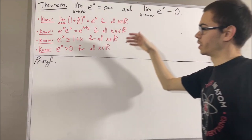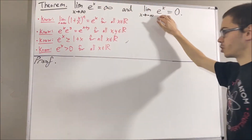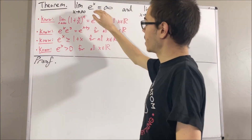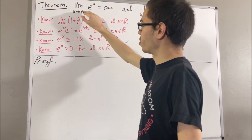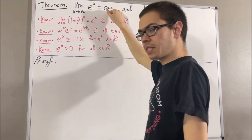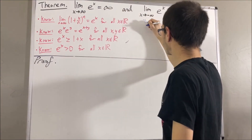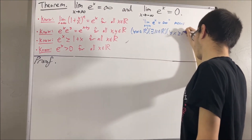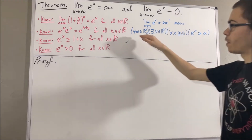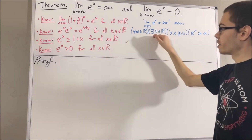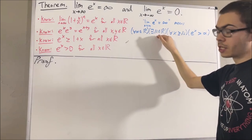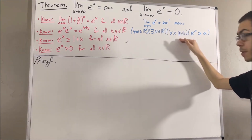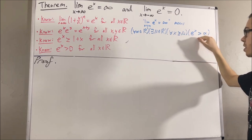Most importantly, what do these two things mean? To say the limit as x approaches infinity of e to the x equals infinity means the following: for every real number alpha, there exists a real number capital N, such that for all real numbers x greater than or equal to capital N, e to the x is greater than alpha.